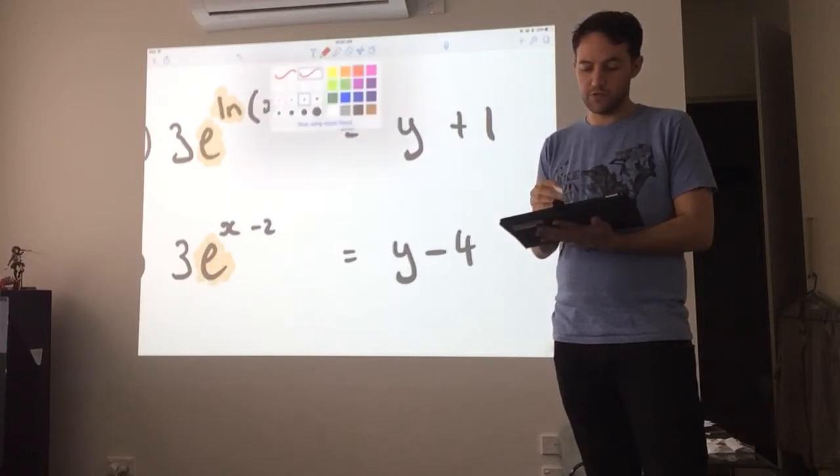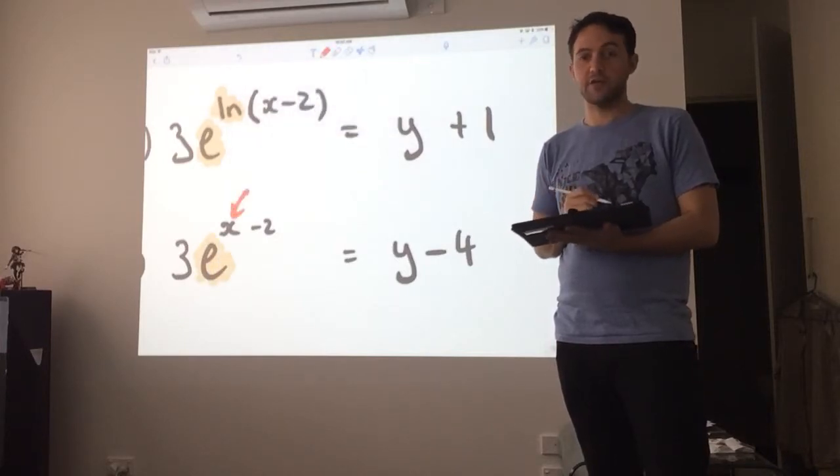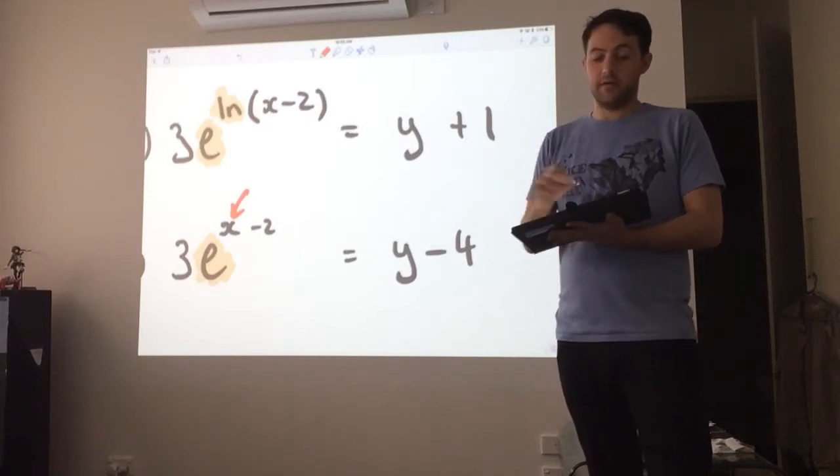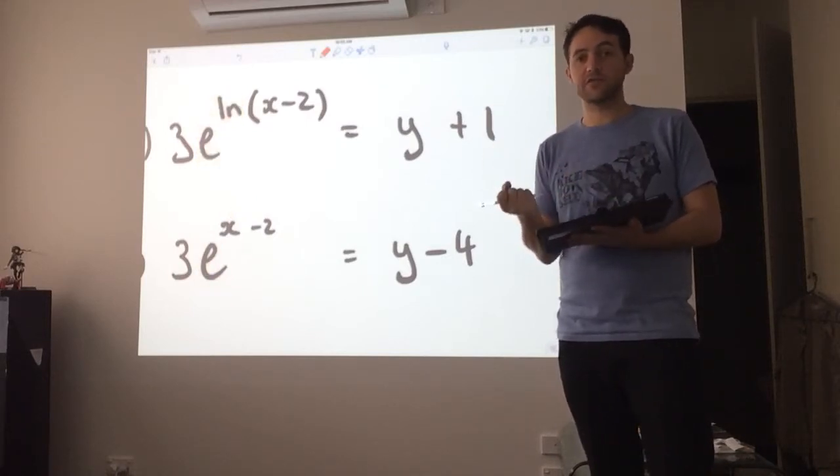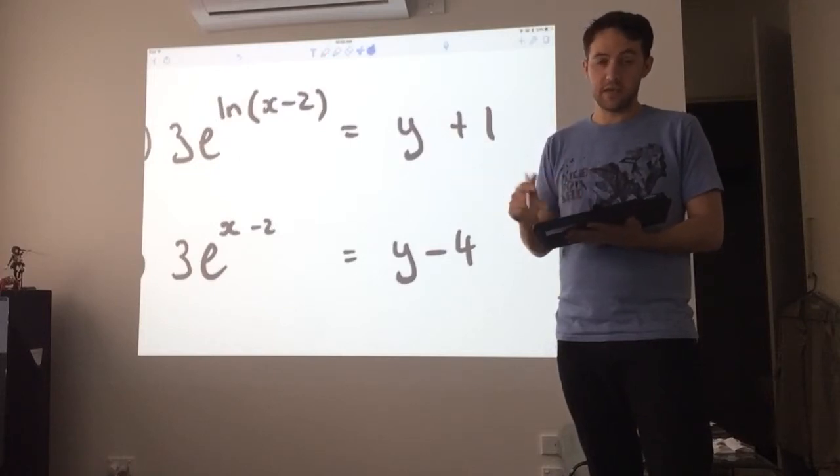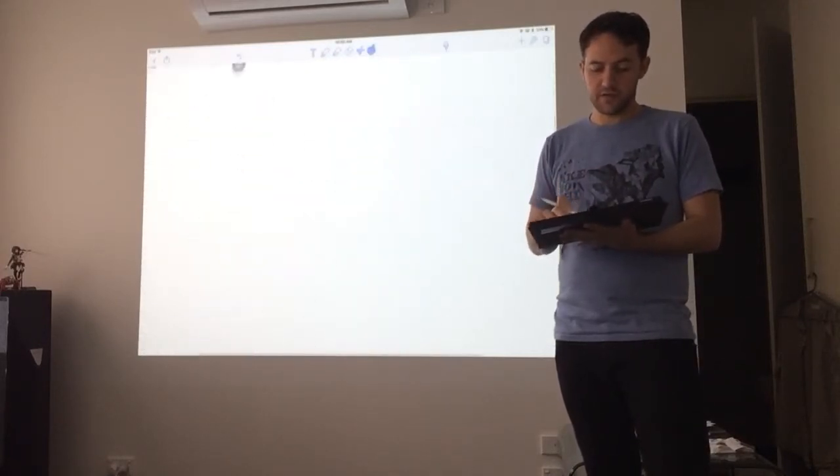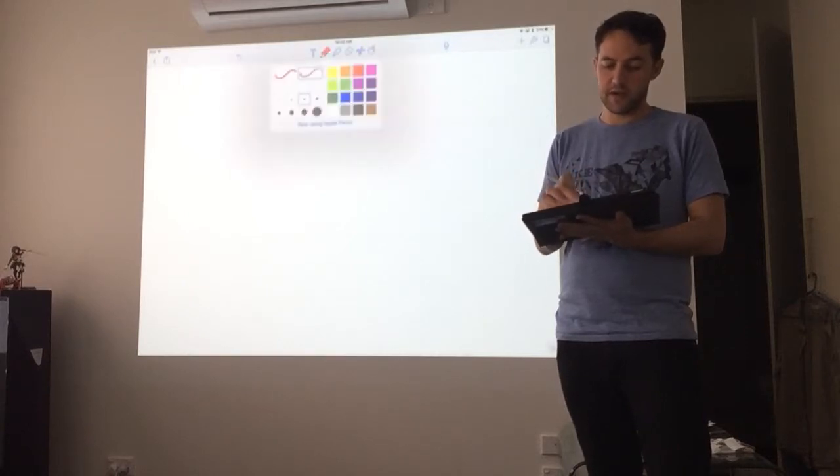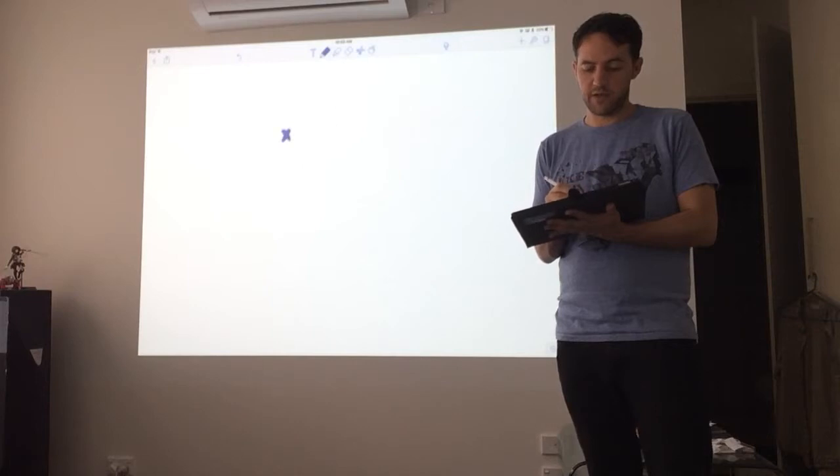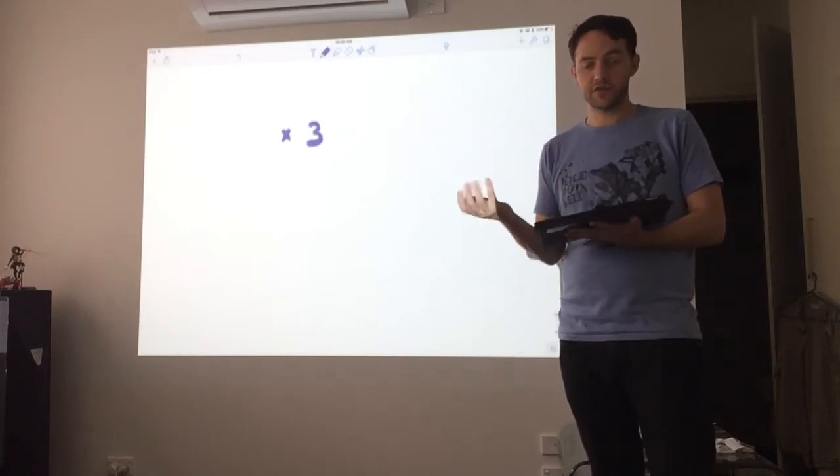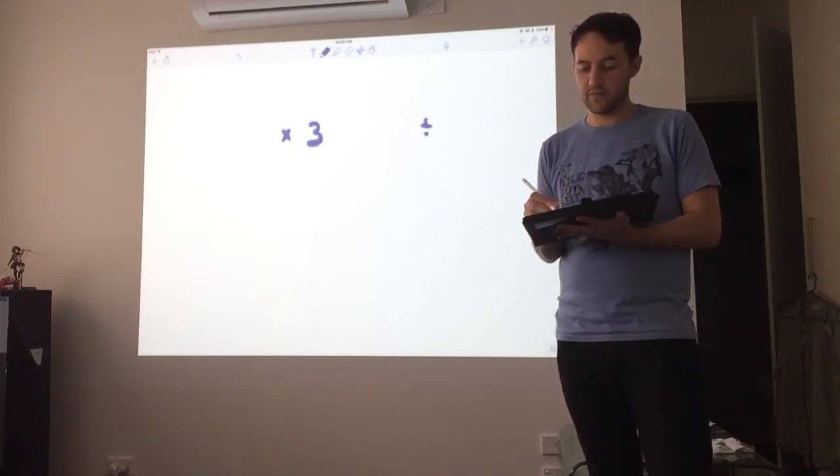and we want to get to the x value that's here. Now, the key idea here is that exponential functions and logarithms, they're inverse operations. So inverse operations, we've looked at a few of these, but we said that multiplying by 3 has an inverse operation which is dividing by 3.